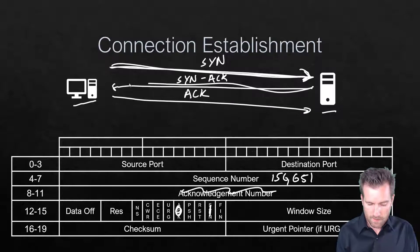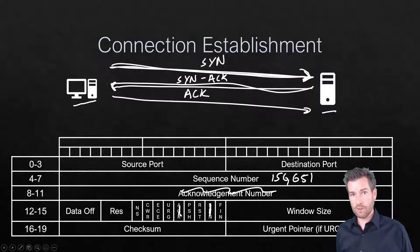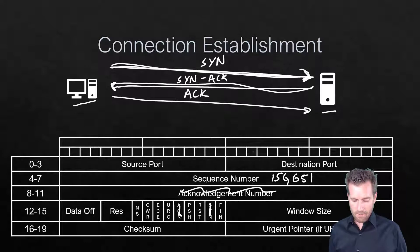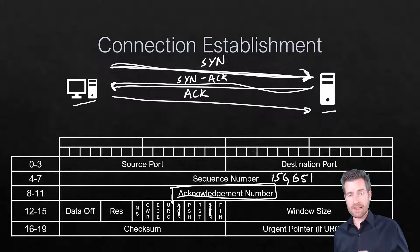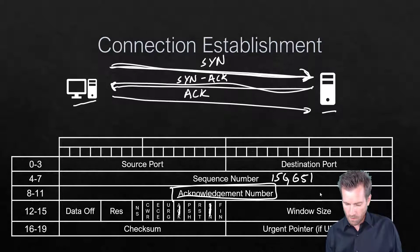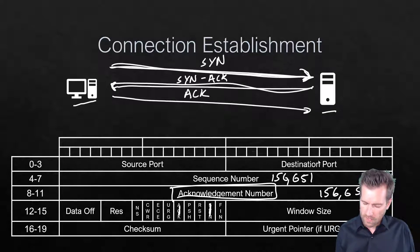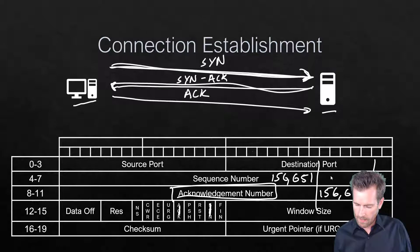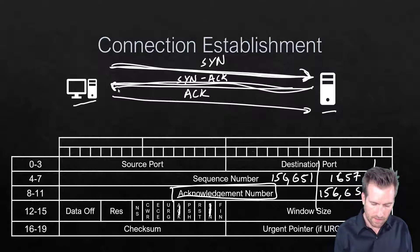The web server sends a SYN-ACK back, meaning there's a one in the SYN column — agreeing to synchronize — and a one in the acknowledgement column. The acknowledgement number indicates the next segment it's expecting, which is 156,652. The server also comes up with its own random sequence number — for example, 1,657 — and sends that across.